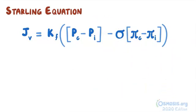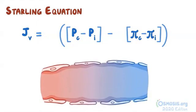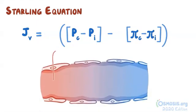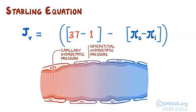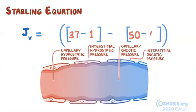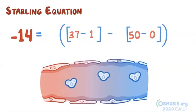To determine if the fluid is going into or out of the capillaries, we can use a simplified version of the equation where we ignore Kf and sigma. Let's say that we are measuring the net pressure in the arterial end of the capillary. The PC, or capillary hydrostatic pressure, is 37 mmHg, and PI, or interstitial hydrostatic pressure, is 1 mmHg. Moving along, PI-C, or capillary oncotic pressure, is 50 mmHg, while PI-I, or interstitial oncotic pressure, is 0 mmHg. We get a net pressure of negative 14 mmHg. And since the number is negative, it means water will move into the capillary. If the number is positive, it means the water will move out.